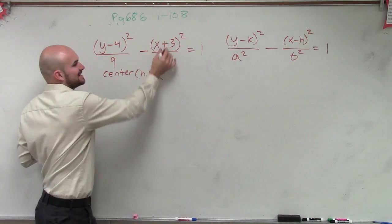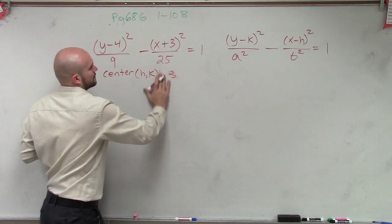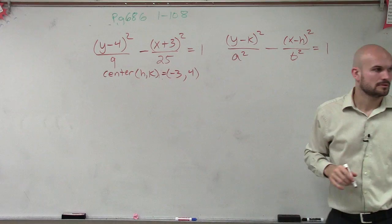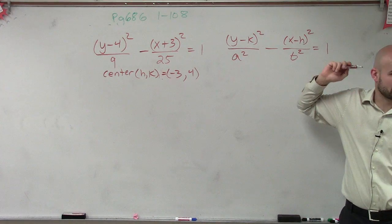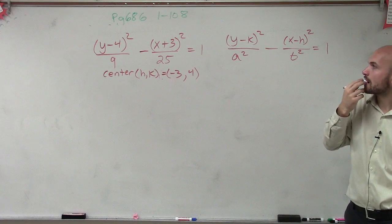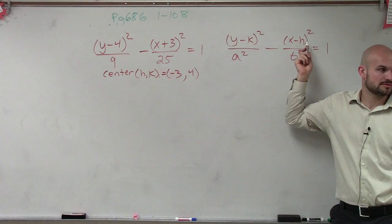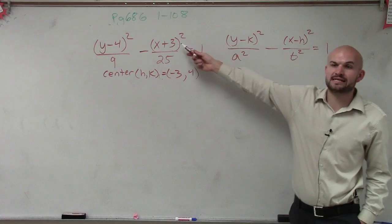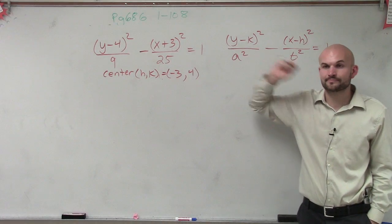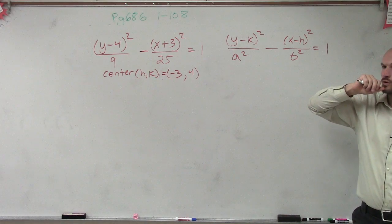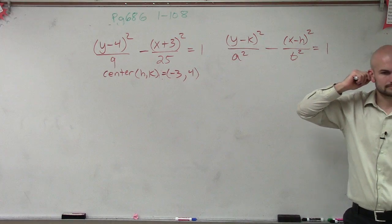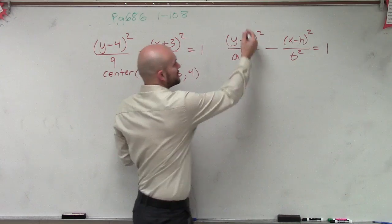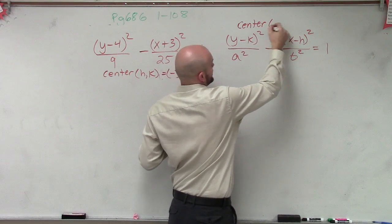So we have center's h, k. So in this case, it's negative 3 comma 4. Right? You've got to make sure you just remember where the h is and where the k is. Wait, why do you put negative 3? Because remember, it's opposite. It's x opposite of h. The center is h comma k.